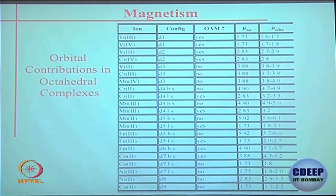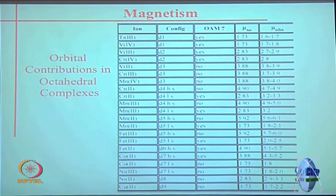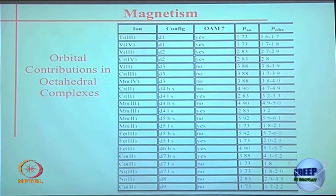We have provided a table with d¹ through d¹⁰ configurations showing t_2g and e_g occupancies, indicating which cases have orbital angular momentum contributions. You should be able to work through each configuration and determine whether orbital angular momentum is present.